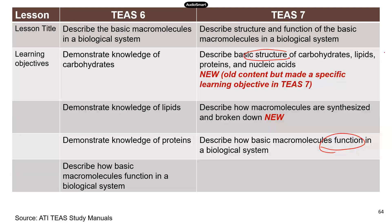There are two new objectives in TEAS 7. The first — even though it's somewhat old — TEAS 7 listed it as a separate objective, so there could be new questions focusing specifically on the structure of those molecules. The second is how these macromolecules are synthesized and broken down, which is a completely new learning objective that wasn't in TEAS 6 at all.